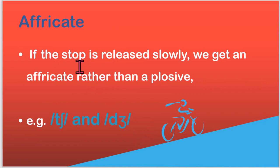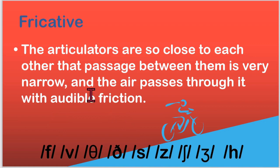An affricate sound is a stop followed by a slow release — not an abrupt release, but a slow release. We have ch and J as the two affricates in English. Fricative sounds are produced when the articulators do not close but come very near each other, creating a passage through which air passes with an audible friction. Examples are F, V, the two th sounds, S, Z, SH, zh, and H.